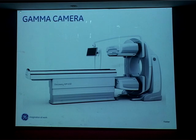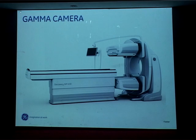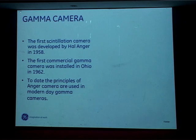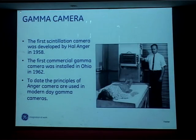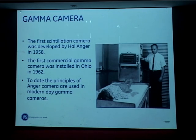I will first start with the gamma camera, which is where nuclear medicine and molecular imaging started from — just as X-rays are the base for radiology, for us it is always the gamma camera. The first scintillation gamma camera was developed by Anger in 1958, and the first commercial gamma camera was installed in Ohio in 1962. Today the principles of the Anger camera are still used in modern-day gamma cameras.